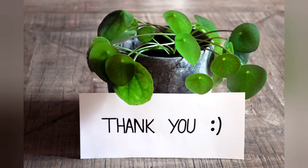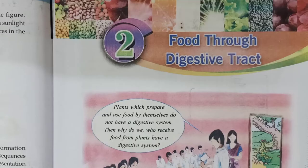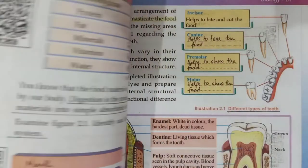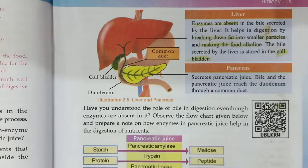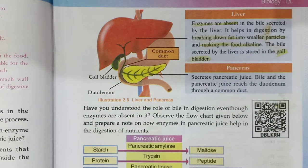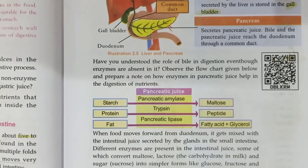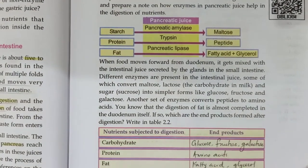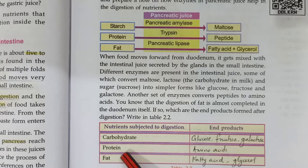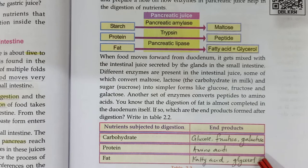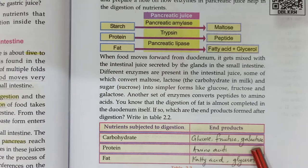Last class we studied the digestion process. Starch or carbohydrates, protein, and fat — these nutrients undergo digestion and become simple nutrients. Digestion is complete in the small intestine. The end products are: starch digestion produces glucose, fructose, or galactose; protein digestion produces amino acids; fat digestion produces fatty acid and glycerol. So the end products are glucose, fructose, galactose, amino acids, fatty acid, and glycerol.